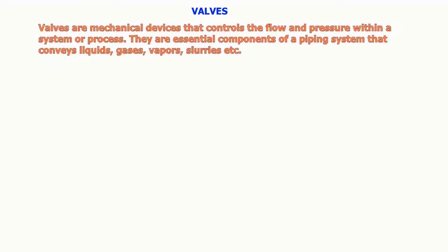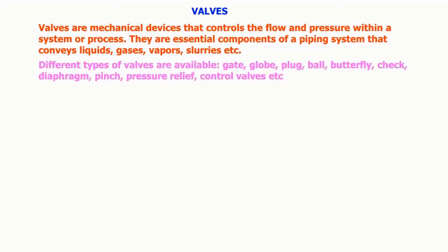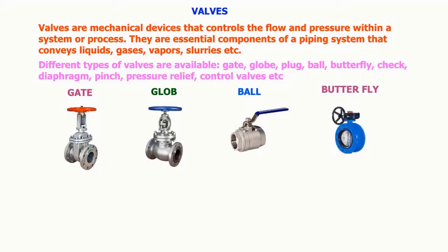Valves are mechanical devices that control the flow and pressure within a system or process. They are essential components of a piping system that conveys liquids, gases, vapors, slurries, etc. Different types of valves are available: gate, globe, plug, ball, butterfly, check, diaphragm, pinch, pressure relief, control valves are the commonly used valves.